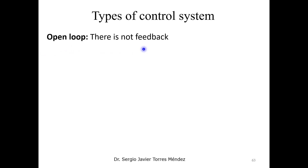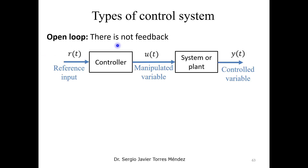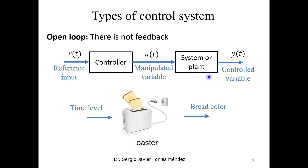The first one is the open-loop control system. A very important characteristic is that we don't have a feedback signal. In the typical block diagram, we receive a reference input to the controller, the controller generates a manipulator variable that affects the plant, generating a response, but there is no relationship between the output and the reference input.